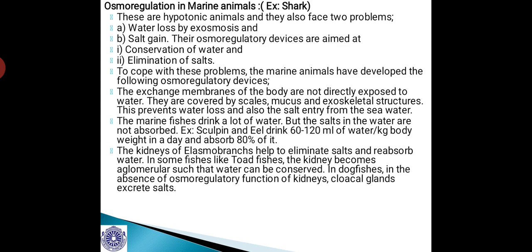Sharks are living in marine waters and these are hypotonic animals and they face two problems: water loss by exosmosis and second, salt gain. Their osmoregulatory devices are aimed at conservation of water and elimination of salts. The exchange membranes of the body are not directly exposed to water and are covered by scales, mucus and exoskeletal structures, which prevent water loss and salt entry from seawater.